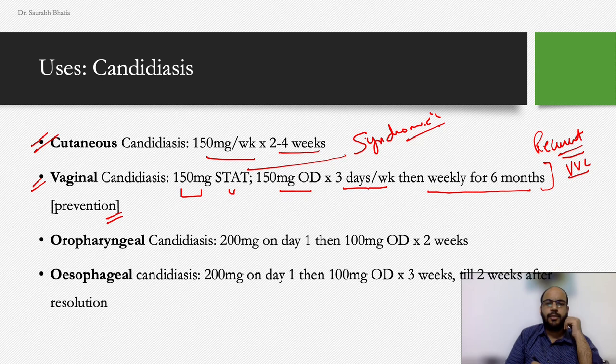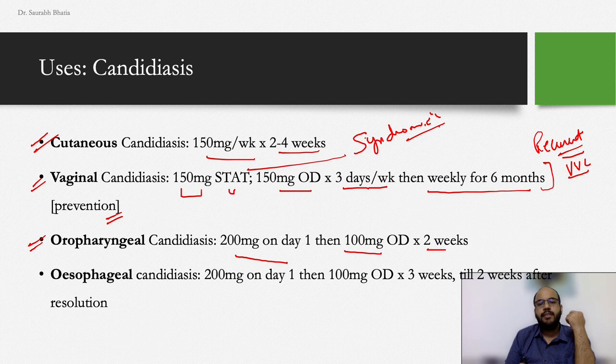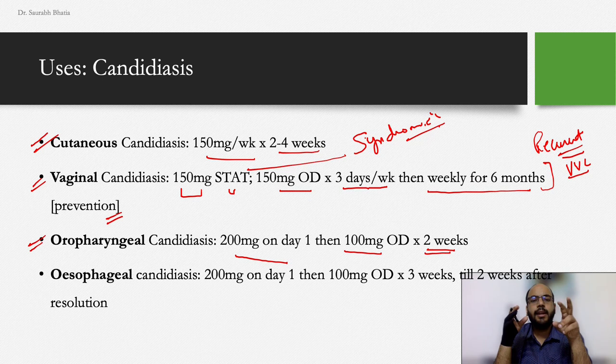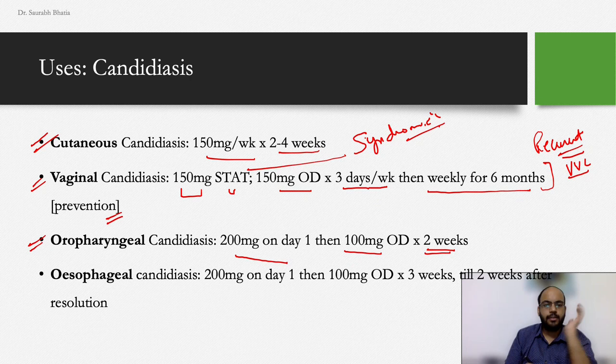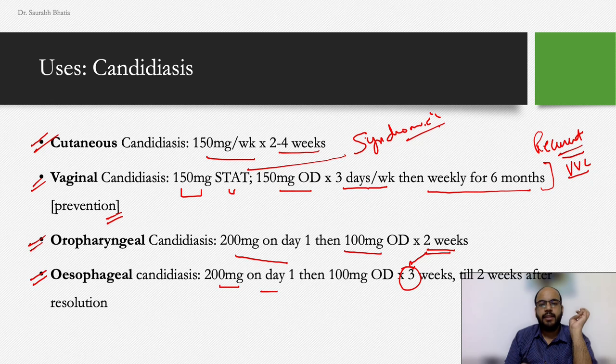For oropharyngeal candidiasis: 200 mg on day one, then 100 mg once daily for two weeks. For esophageal candidiasis: the same regimen but extended — 200 mg on day one, then 100 mg once daily for three weeks until complete resolution.